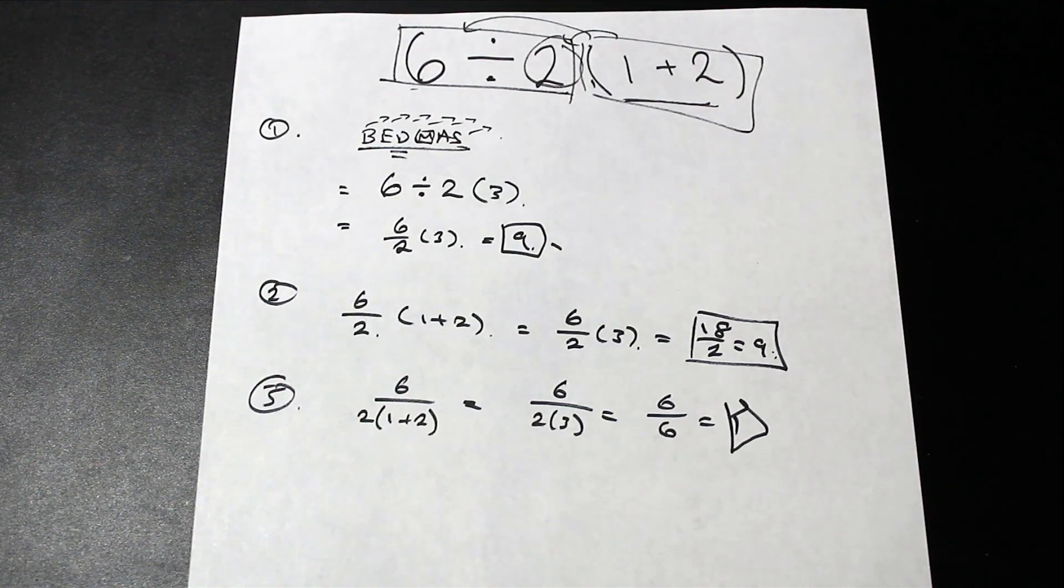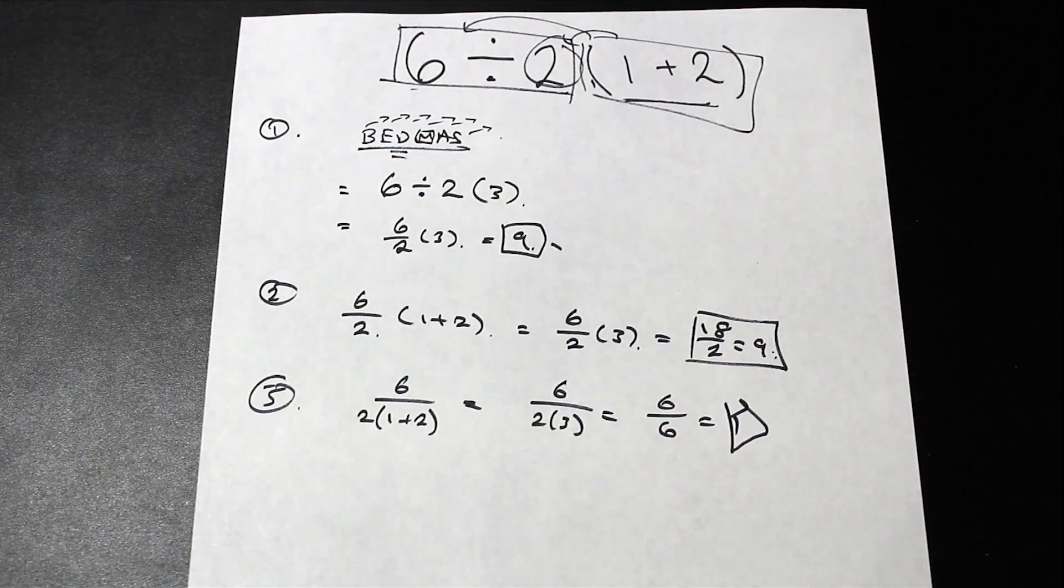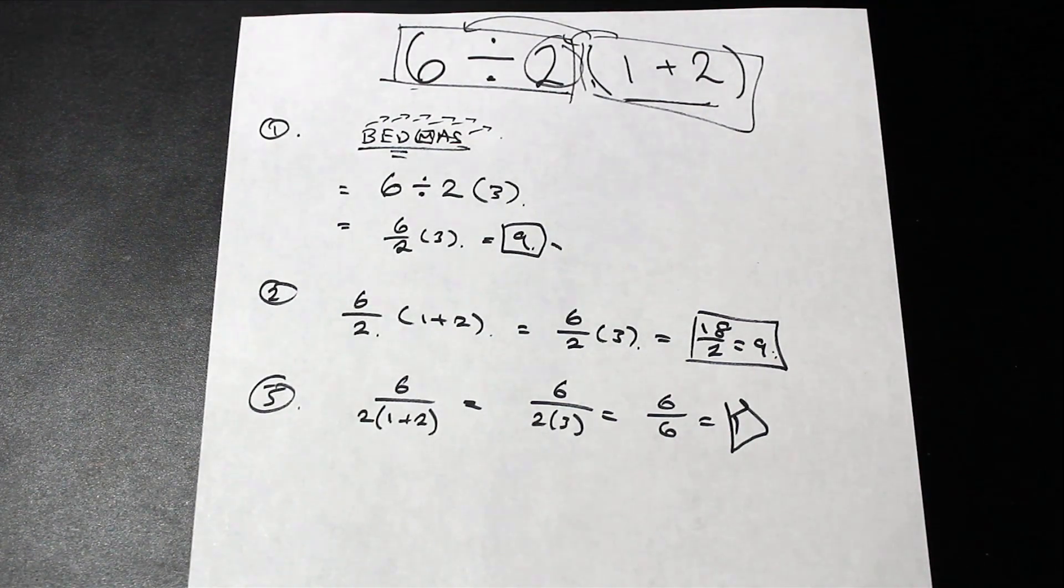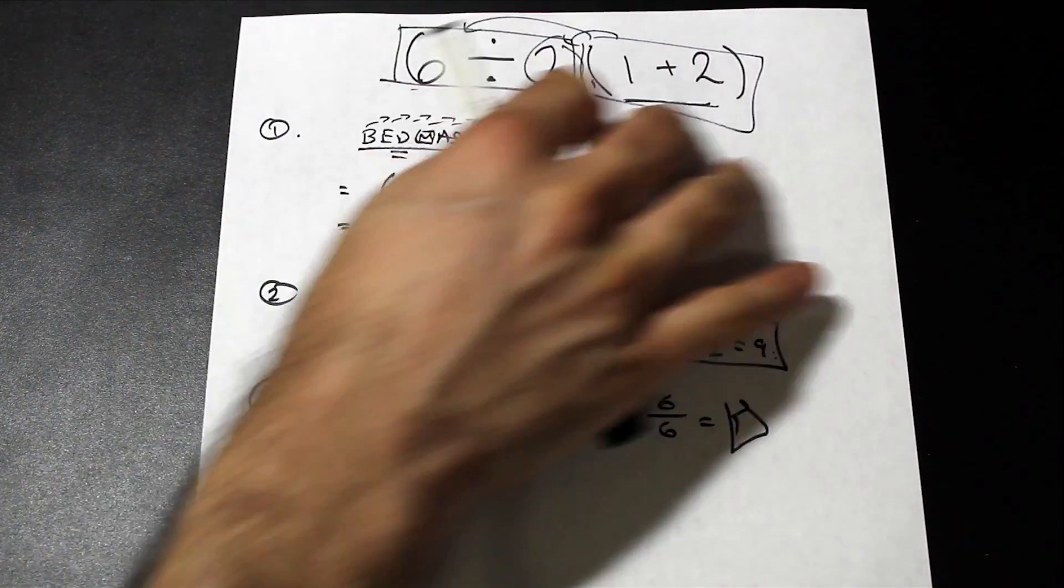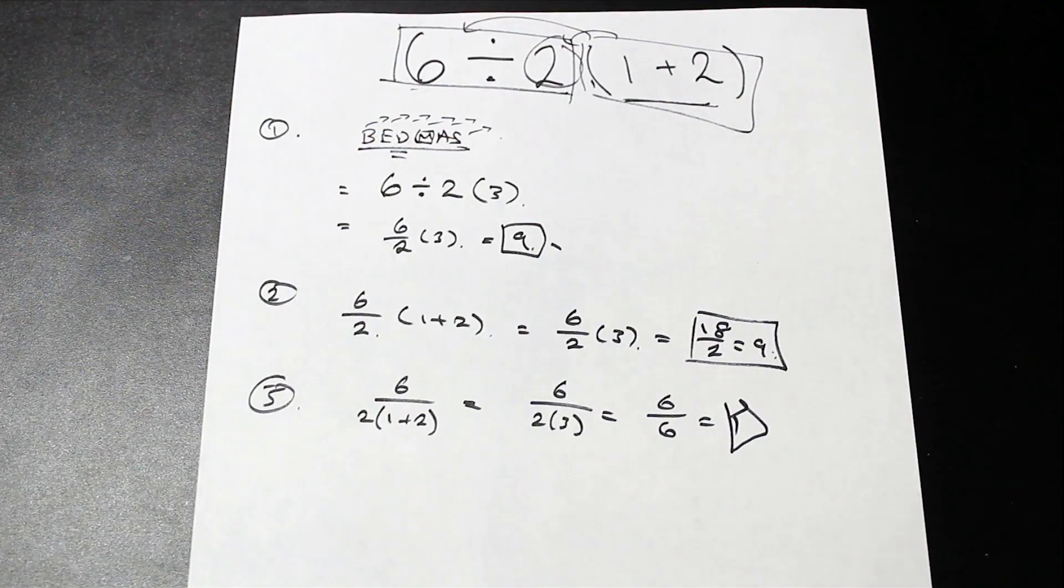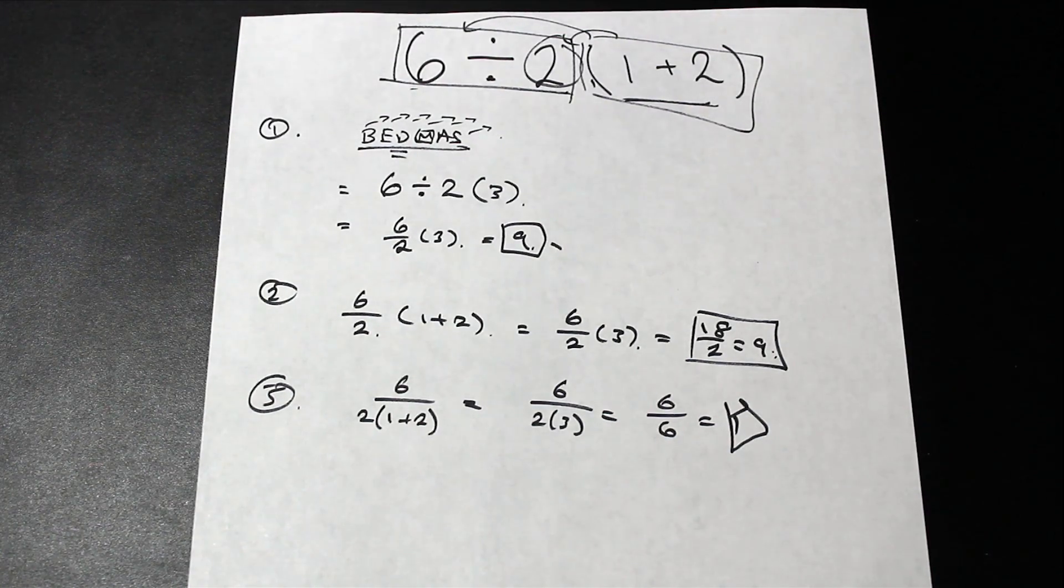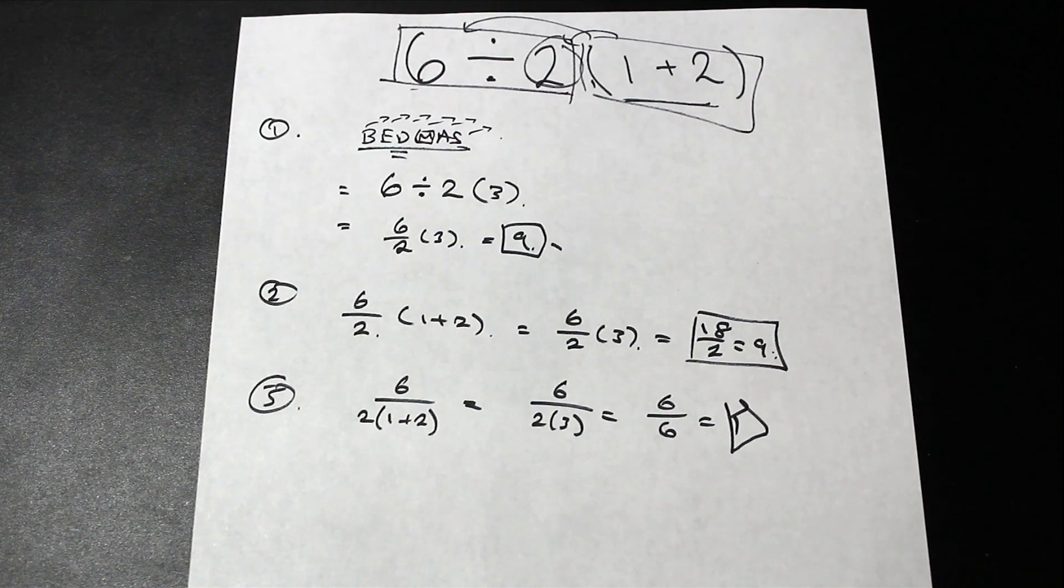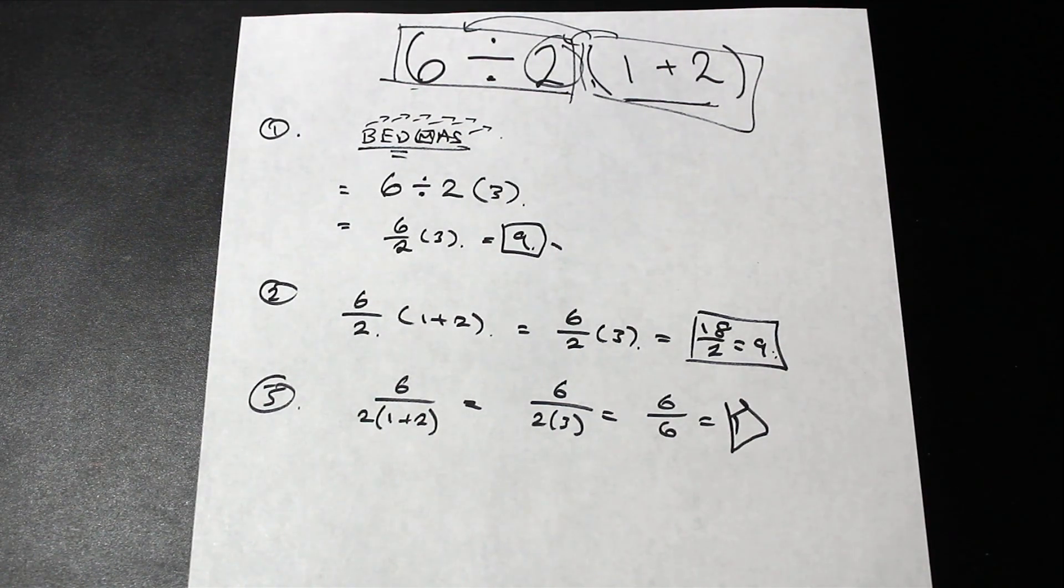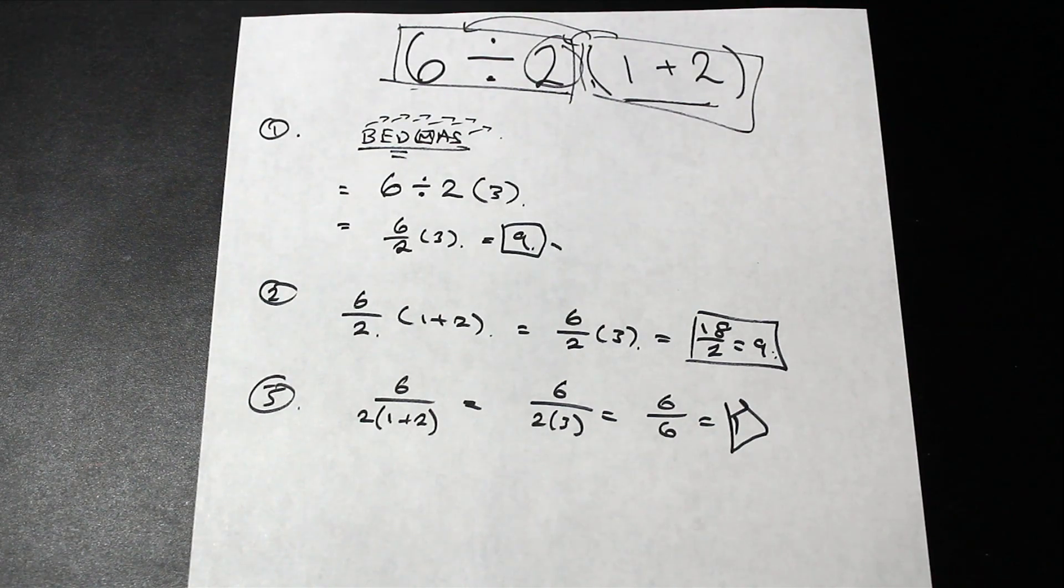However, Wolfram Alpha does say nine, so at the end of the day there's no for sure answer here, because it's a convention issue in terms of the symbol that is used. Convention does change from where you're taught and over time. Currently in SAT testing, nine would probably be correct, and Wolfram Alpha says nine, but I think an argument could be made for one as well.